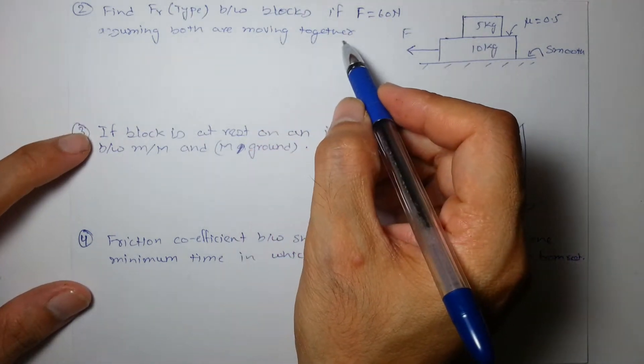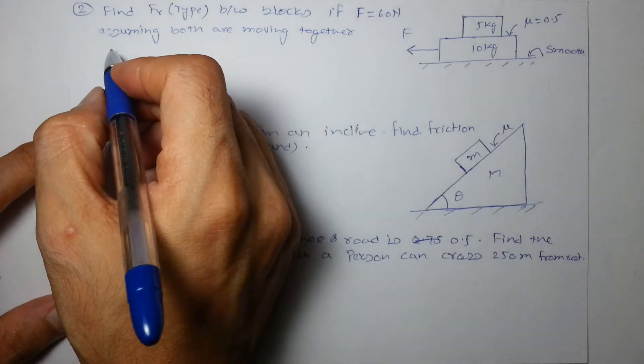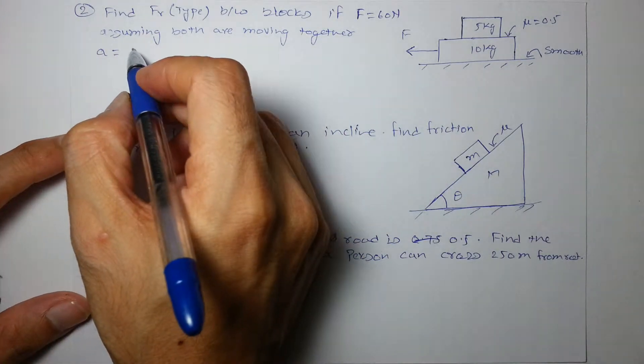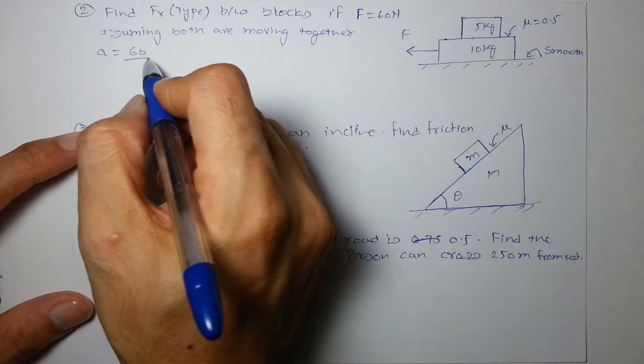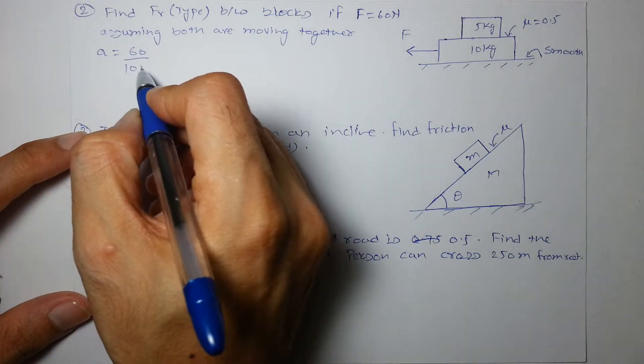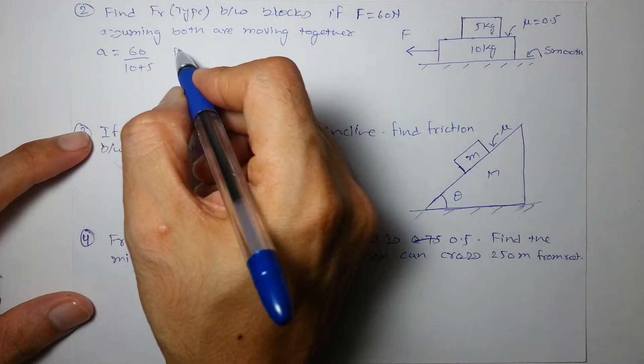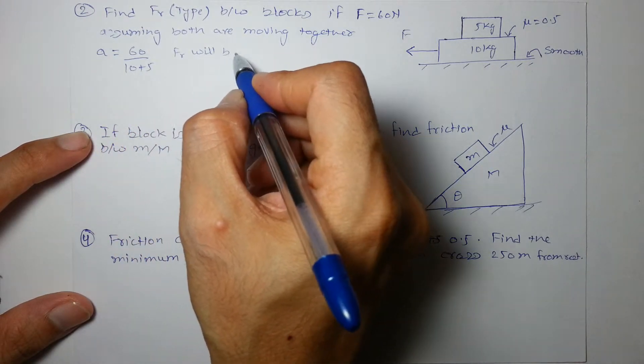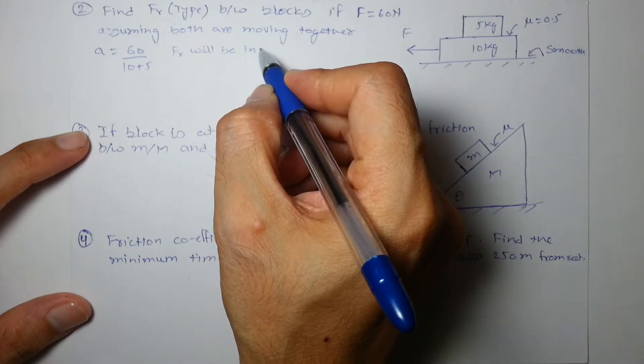We are assuming that both are moving together and that acceleration will be F which is 60 divided by the total mass 10 plus 5, as friction will be an internal force.